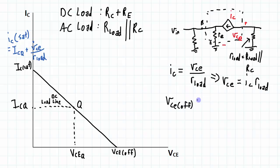it's going to be equal to the DC operating point plus the VCE swing going in this direction. So VCE is going to be VCEQ plus the VCE swing, whatever that happens to be — the delta VCE due to the input AC signal.